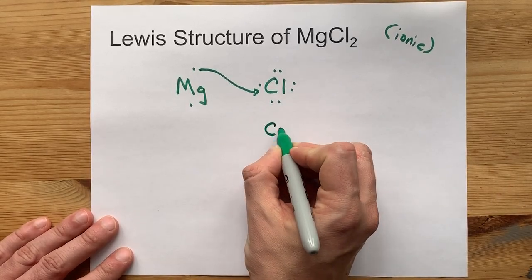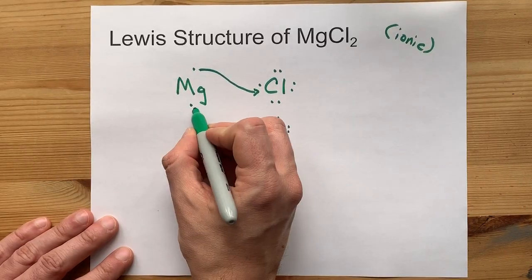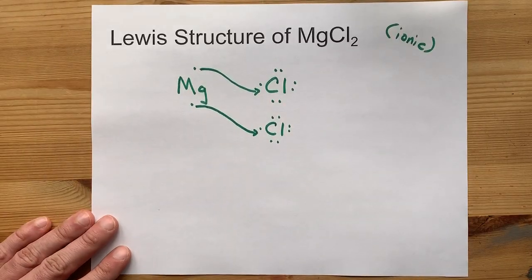If you bring in a second chlorine atom with its 7 electrons, magnesium can give that extra electron away as well.